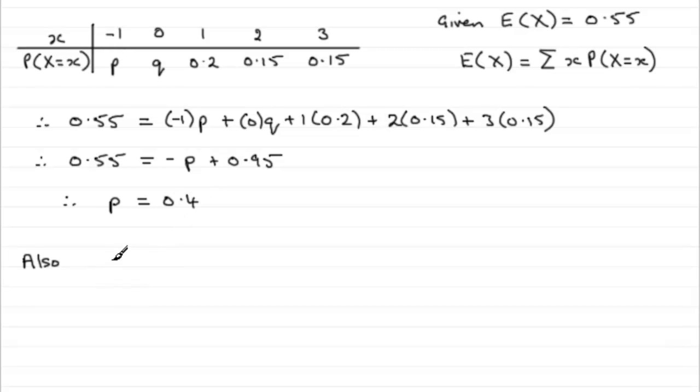plus q, plus the 0.2, the 0.15, and the other 0.15, well, that's got to come to 1. And, if you add these values up, subtract away from 1, you'll find that you get q equals 0.1.